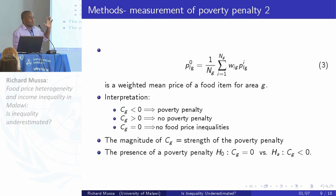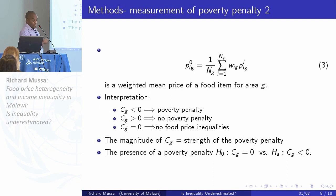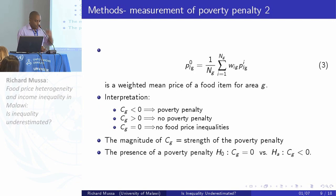Interpreting the concentration indices is straightforward: if the concentration index is negative, it means there's a high concentration of high food prices among the poor — essentially a poverty penalty in the food market. If it is greater than zero, the rich are paying more for food. If it equals zero, there's no income-dependent food price. The magnitude of the concentration index tells us the strength of the poverty penalty. It's simply a question of testing whether the concentration index is zero or less than zero — that's what I do to check whether there's a food penalty in Malawi.